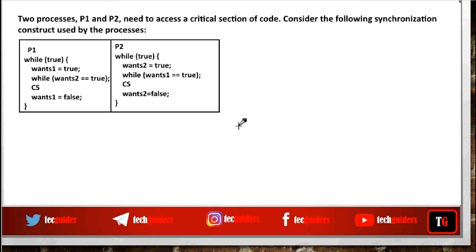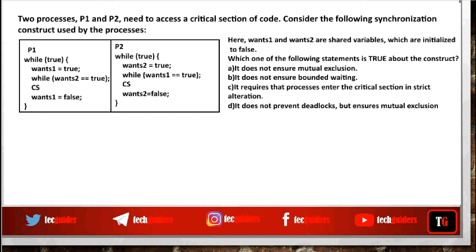Two processes P1 and P2 need to access a critical section of code. Consider the following synchronization construct used by the processes. Here once1 and once2 are shared variables which are initialized to false. Which one of the following statements is true about the construct? Options: it doesn't ensure mutual exclusion with no bounded wait; there is strict alternation between the processes; it does not prevent deadlock but ensures mutual exclusion.